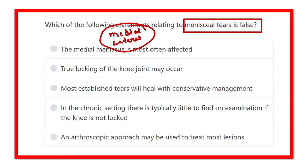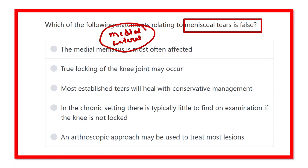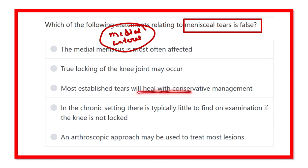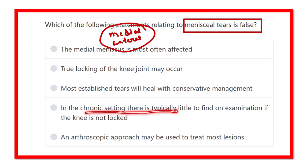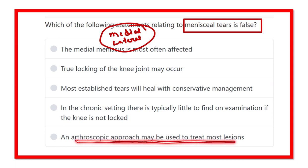Here are the options: The medial menisci is most commonly affected; locking of the knee joint may occur; most established tears will heal with conservative management; in chronic setting there is typically little to find on examination if the knee is not locked; and an arthroscopic approach may be used to treat most of the lesions.